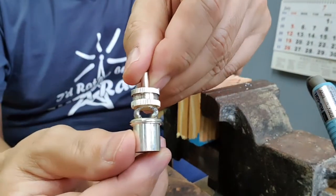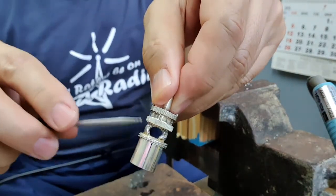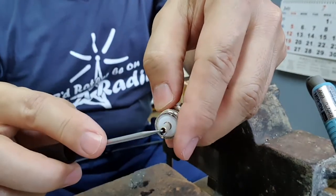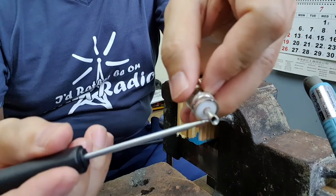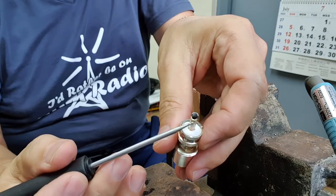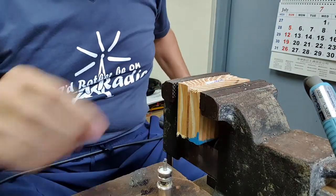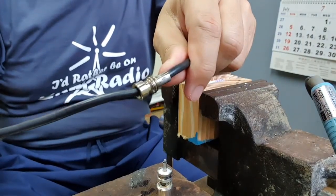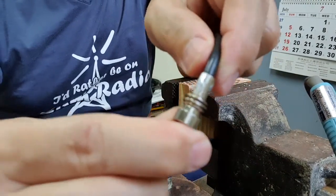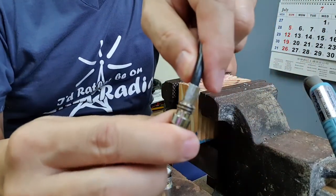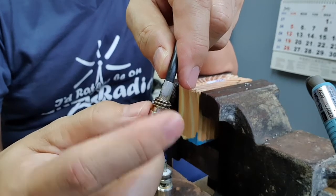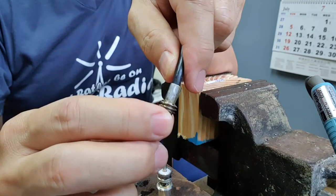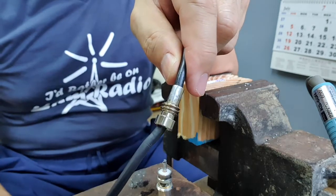Okay done, so as you can see I have already tinned this area here with solder and also the other side for preparation, and also I have tinned this area here, the positive side. I have also tinned the sleeve and slipped it inside the coax.